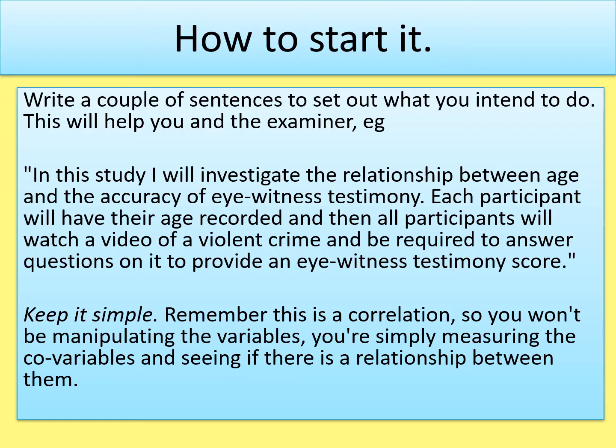Before using the subheadings, write a couple of sentences to set out what you intend to do — that shows the examiner you have a clear idea of what's going on. This is especially important for a correlational study, because people sometimes try to turn it into an experiment. With a correlation you are simply measuring two co-variables; each person will have two scores and you're seeing if there's a relationship between them. For example: 'In this study I will investigate the relationship between age and the accuracy of eyewitness testimony. Each participant will have their age recorded and all participants will watch a video of a violent crime and be required to answer questions on it to provide an eyewitness testimony score.'